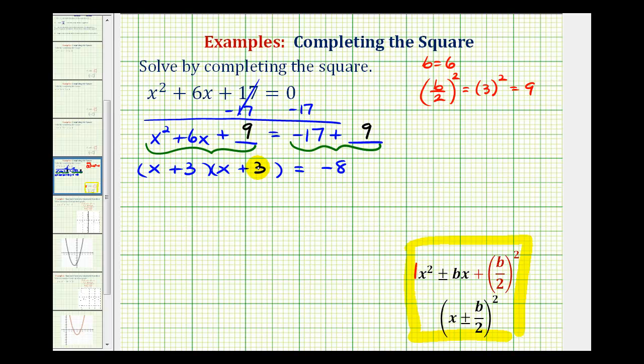So notice how we have two equal factors, verifying that this is a perfect square trinomial. And we can write this as the quantity x plus 3 squared equals negative 8.